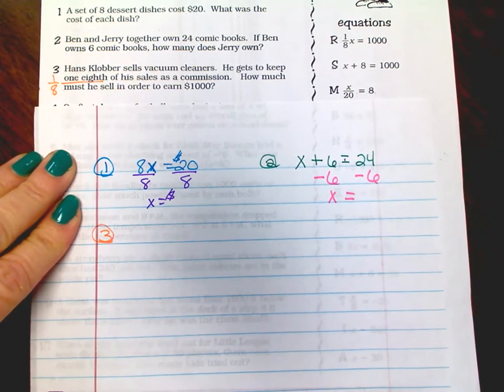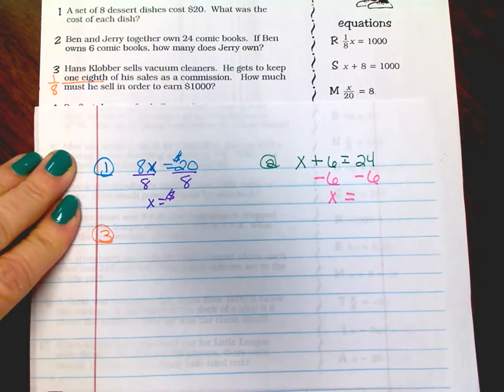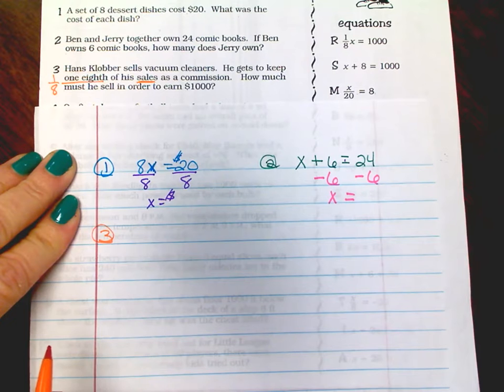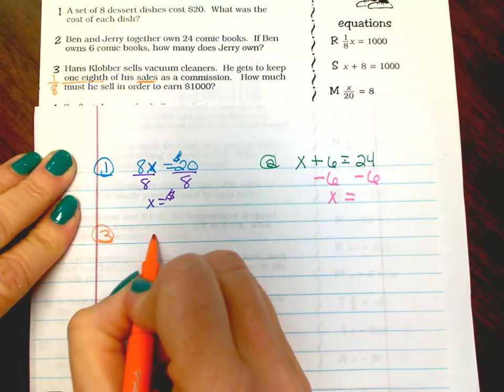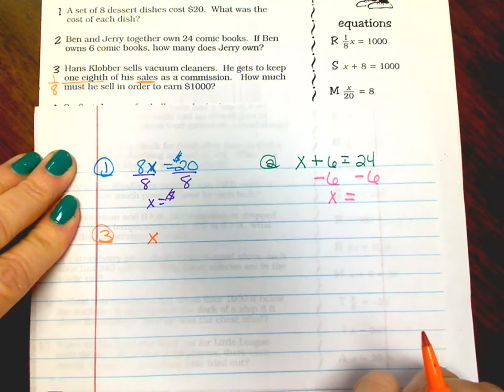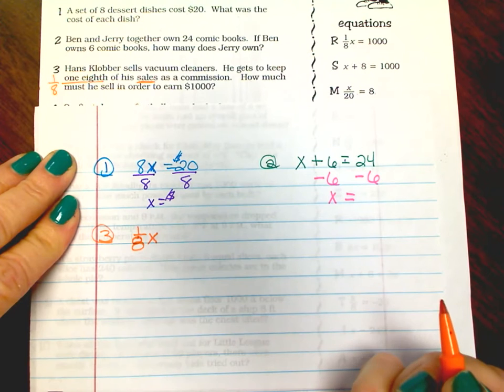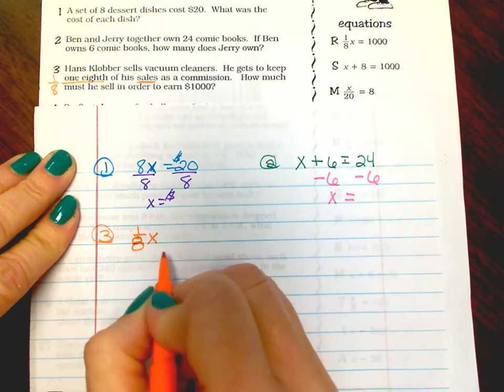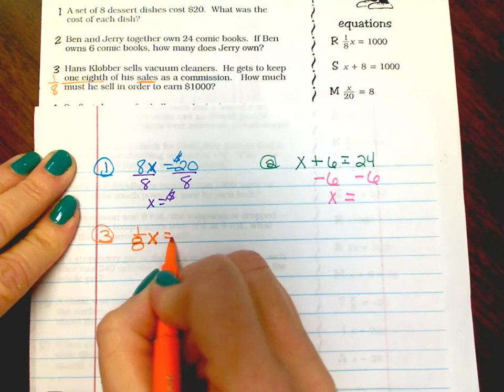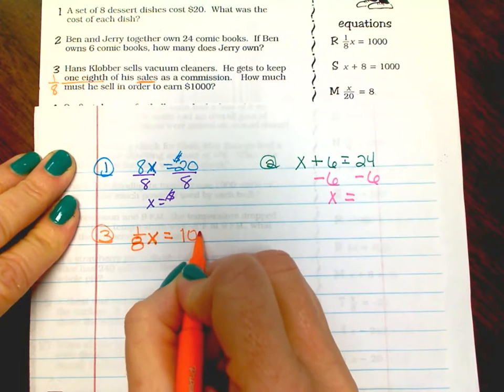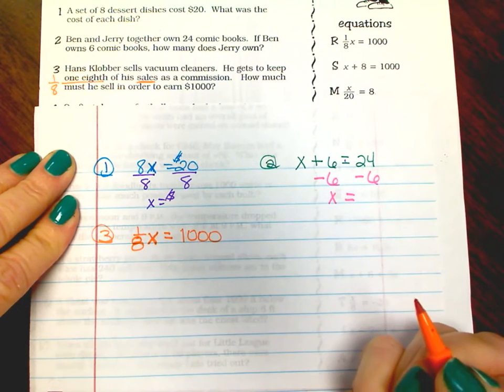Some of you may want to change that to look like one-eighth of his sales. So one-eighth of his sales he gets commission, so his sales are going to be X, and one-eighth of those, oops I did one-half, one-eighth of those, one-eighth of his sales is his commission, and he wants to know how many sales will he need to do to get a thousand dollars.